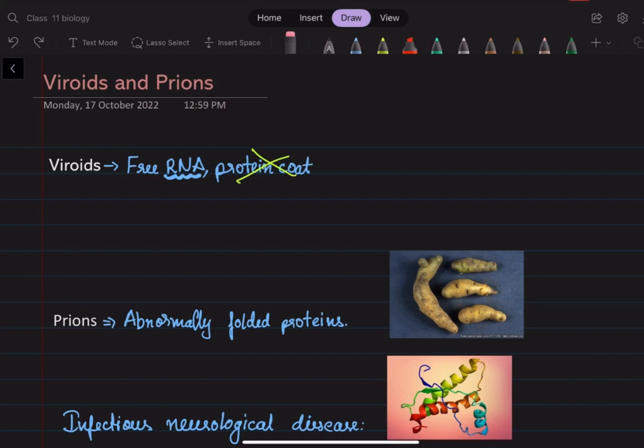The nucleic acid present is RNA only, and the protein coat is absent. This free RNA is of low molecular weight, and since it's low molecular weight, the size is also low. Hence, in general, viroids are smaller than viruses.